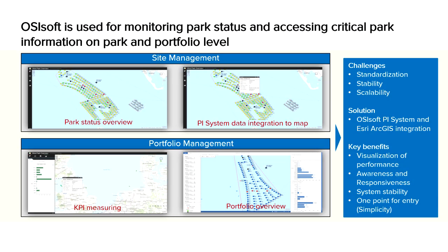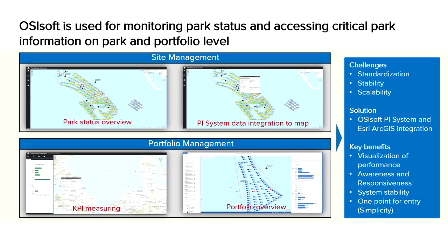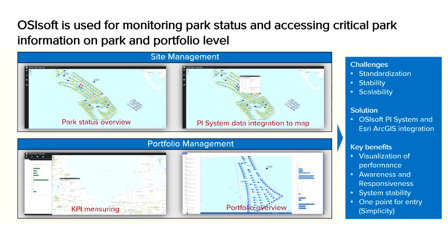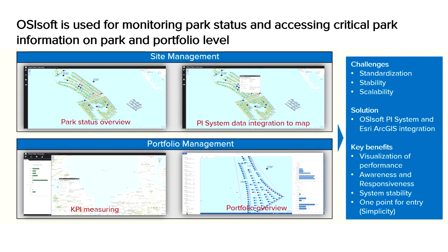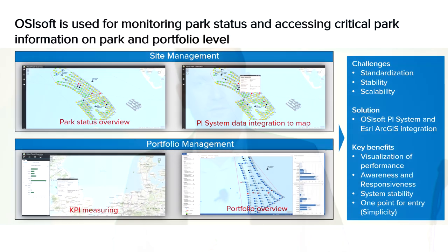A site manager, for instance, can go to the map and get a spatial overview of all the generated work orders and thereby optimize the offshore logistics. That is what we call front-loading the line of business.